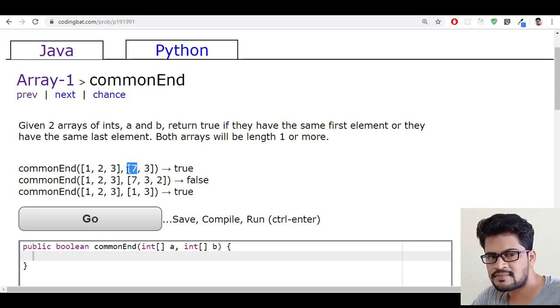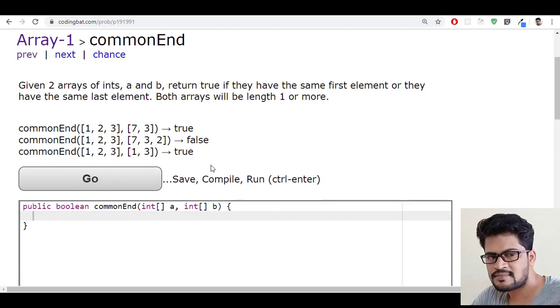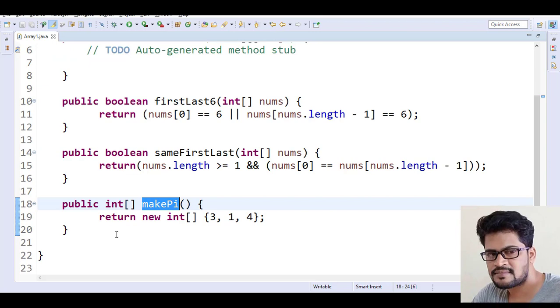So if matched, return true, otherwise return false. How to get the first element is array[0]. How to get the last element is array[length - 1]. Let me copy this back to Eclipse and paste it.